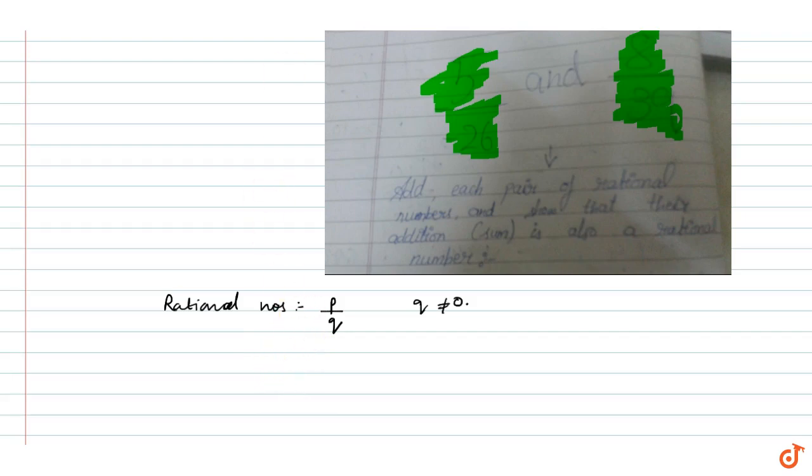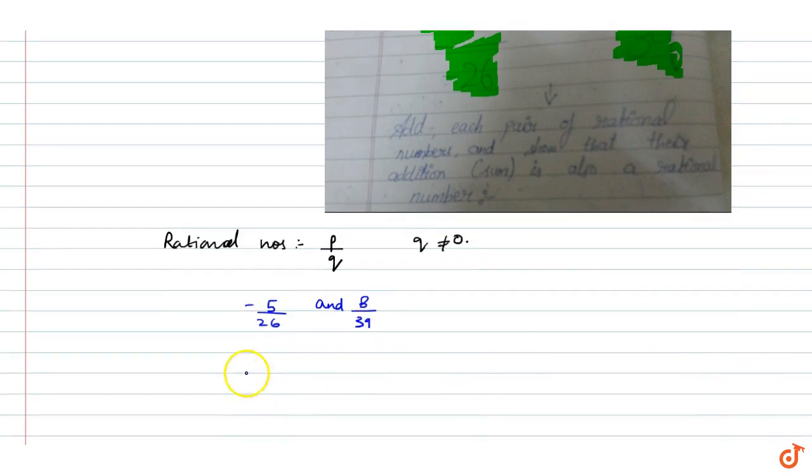We have been given the pair of rational numbers: minus 5 by 26 and 8 by 39. We have to add these. So we write it as 8 by 39 plus minus 5 by 26.